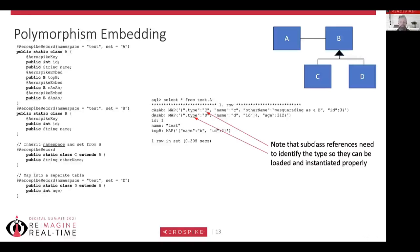I can also choose to embed polymorphic objects instead of referencing them. Changing to AerospikeEmbed for the top B, C-as-B, and D-as-B fields, the select from test.a now shows a magic '@type' parameter in each embedded map. This tells the mapper what sort of object is really being stored, so when loading C-as-B or D-as-B it knows to instantiate a C or D. It then populates attributes from both the subclass (like C's 'otherName') and the superclass B (name and ID). So the mapper understands inheritance and maps these objects correctly.